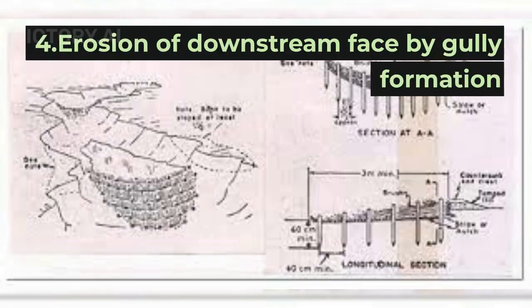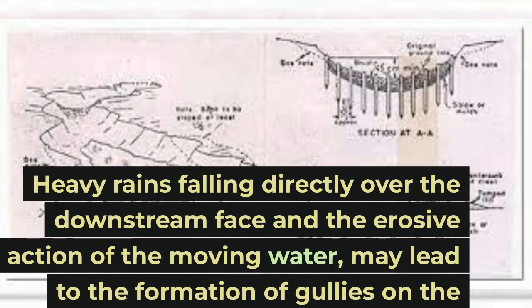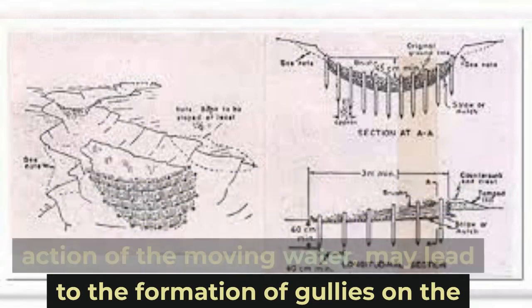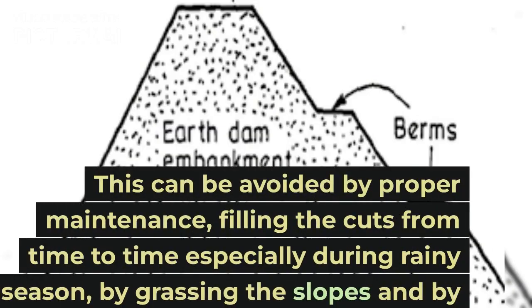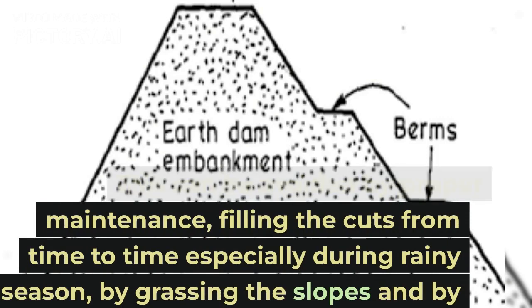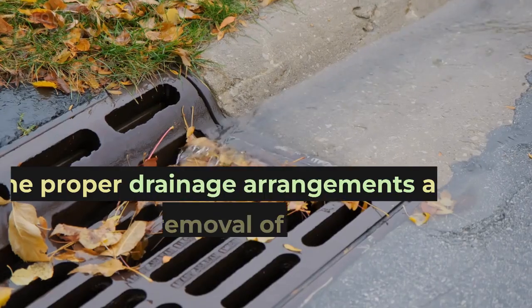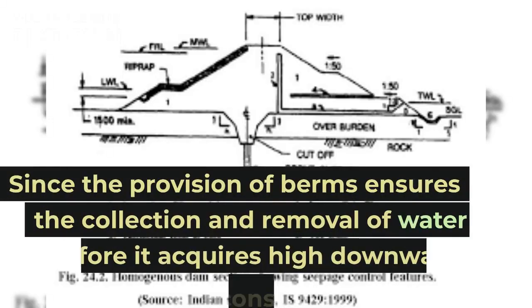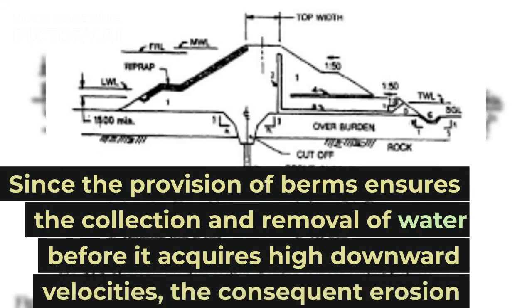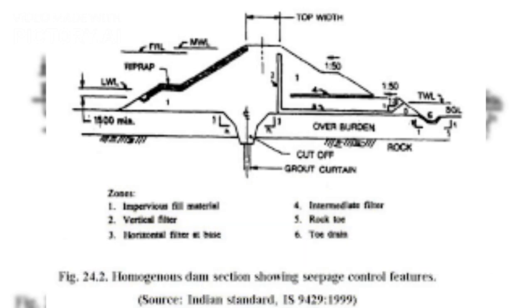4. Erosion of Downstream Face by Gully Formation. Heavy rains falling directly over the downstream face and the erosive action of moving water may lead to the formation of gullies on the downstream face, ultimately leading to dam failure. This can be avoided by proper maintenance, filling cuts from time to time especially during the rainy season, by grassing the slopes, and by providing proper berms at suitable heights, so that water does not have to flow for considerable distances. Proper drainage arrangements are made for removal of rainwater collected on the horizontal berms, considerably reducing erosion from moving water runoff.